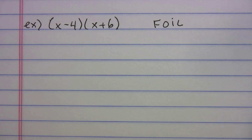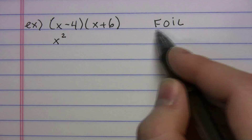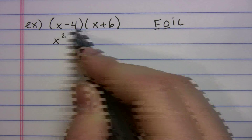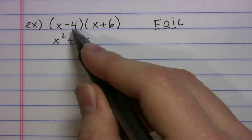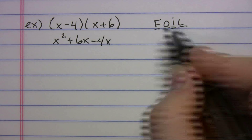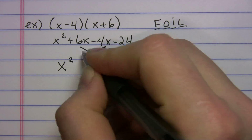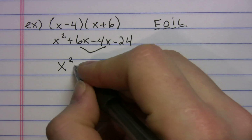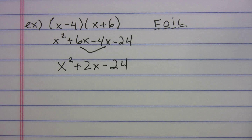First: x squared. Outer: x times positive 6 = positive 6x. Inner: negative 4 times x = negative 4x. Last: negative 4 times 6 = negative 24. Combining like terms: x squared, 6x minus 4x = positive 2x, bring down the minus 24. Done!